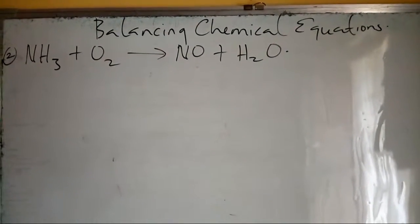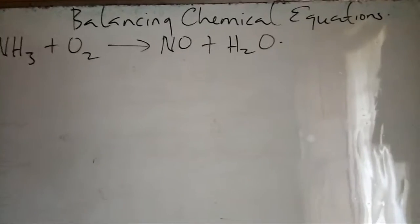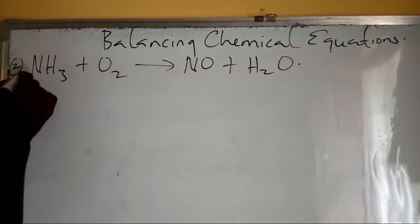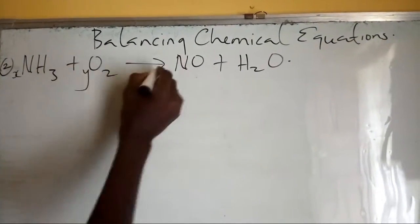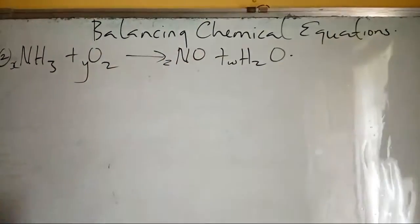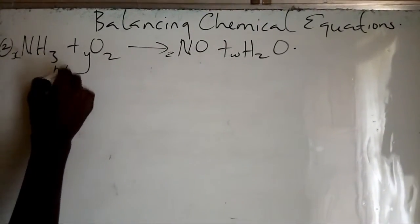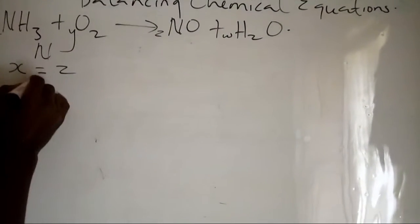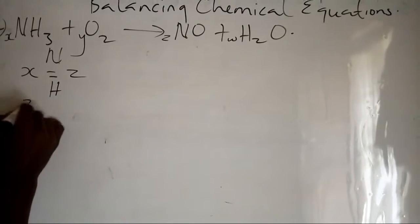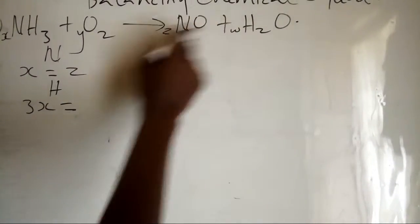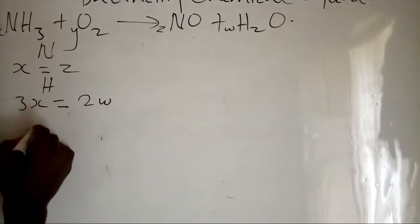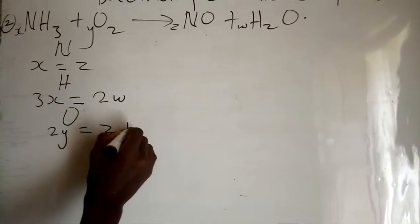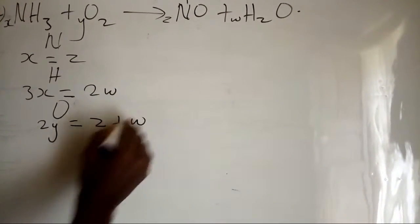This is the next example where ammonia, NH3, is reacting with oxygen to give NO and H2O. Let's represent our moles by letters x, y, z, and w. For nitrogen: x equals z. For hydrogen: 3x equals 2w. For oxygen: 2y equals z plus w.